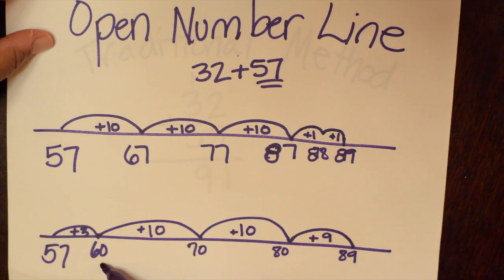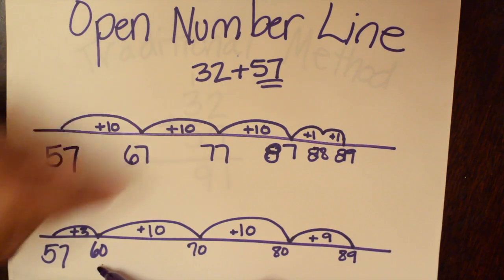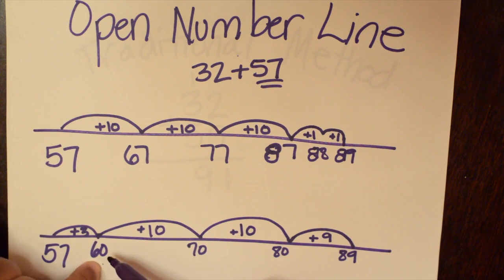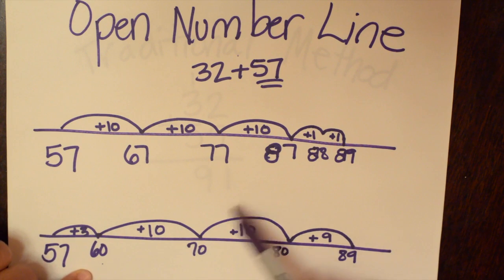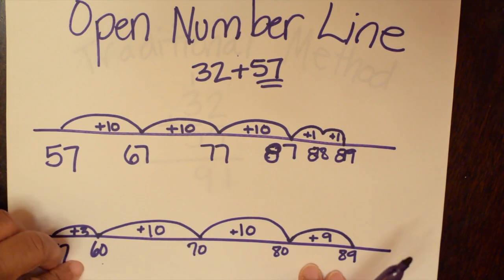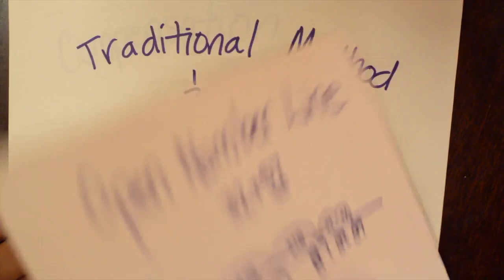Or they could start with 57 and jump three to get to a friendly number, and then they'd have 29 left to jump. I want you to see I got the 29 from subtracting the three that I did to get to a friendly number. So I jumped three, and now I have 29 left, and I jump 10 and then 10 and then 9, and I get to 89. And that's the open number line.